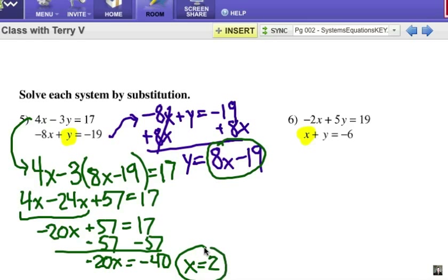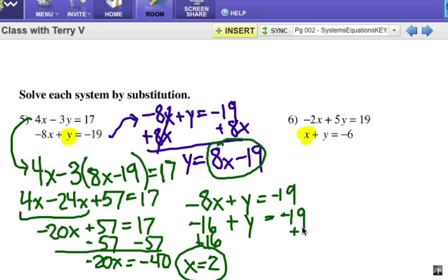All right, that is one of my answers. Now I choose either equation to solve and substitute that in. I'm going to take this first equation -8x + y = -19. I'm going to substitute in positive 2 for the x, so that would be -16 + y = -19. I'm going to add 16 to each side so I can get the y by itself, and y would be -3.